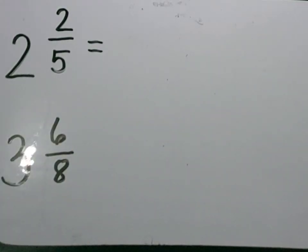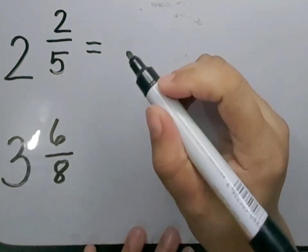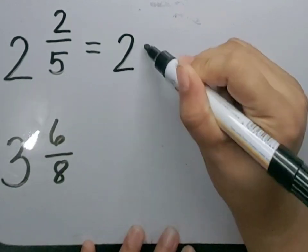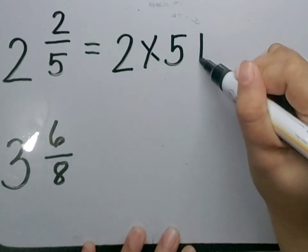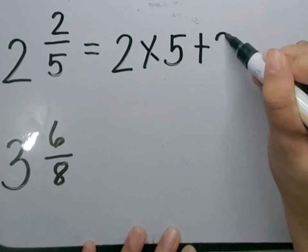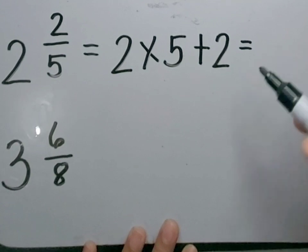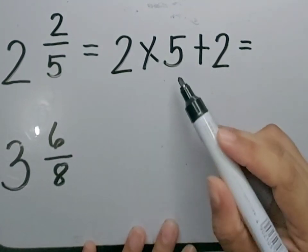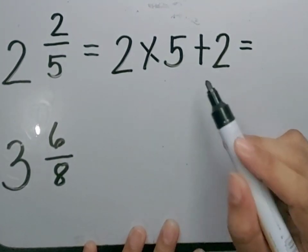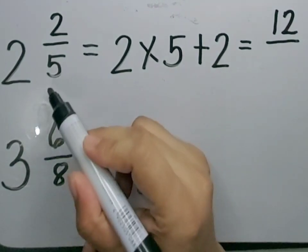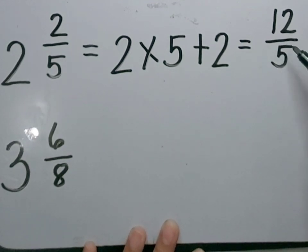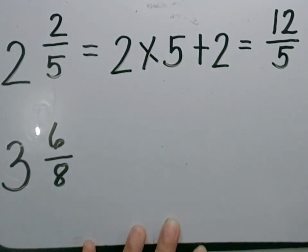Let's change these mixed fractions into improper fractions. Let's multiply the whole number and the denominator, then add the numerator. 2 times 5 is equal to 10, plus 2 will be 12. Then copy the denominator. The improper fraction of 2 and 2 fifths will be 12 over 5.